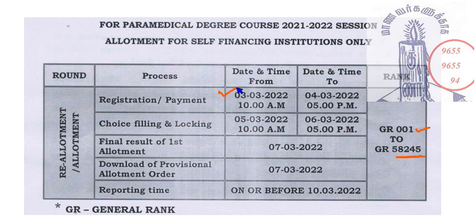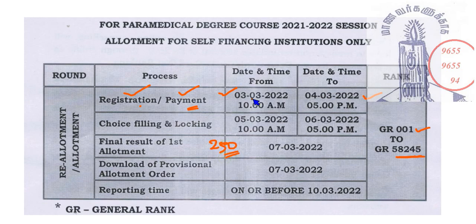The second round schedule is March 3 to 4. If you want to do a registration or second round registration in March 3 or March 4, you can do a choice filling on March 5.